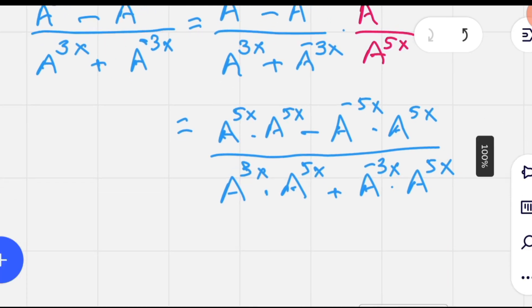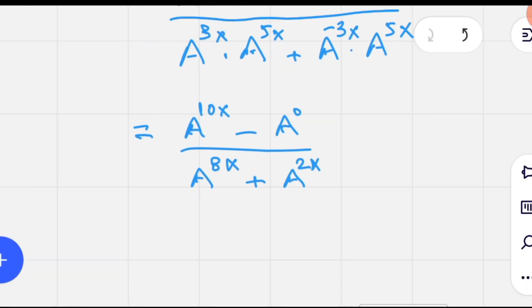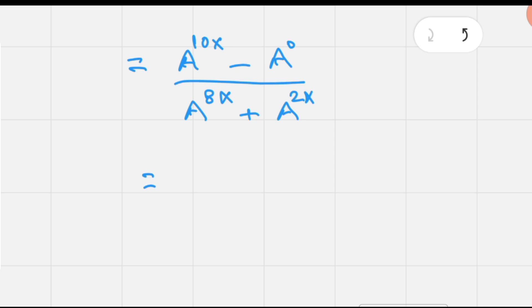Now, from the algebra point of view, we know that when bases are same in case of multiplication, then the powers are added. So we have A^(10x) minus A^0 in the numerator, and similarly in the denominator we have A^(8x) plus A^(2x).